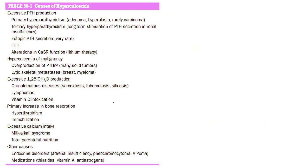Coming to the causes, we have causes with excessive PTH production, and other causes where calcium increases due to non-PTH mechanisms, leading to negative feedback inhibition of PTH. In excessive PTH production, PTH is produced in a manner not appropriately suppressed by increased serum calcium levels, since PTH normally leads to increased serum calcium.